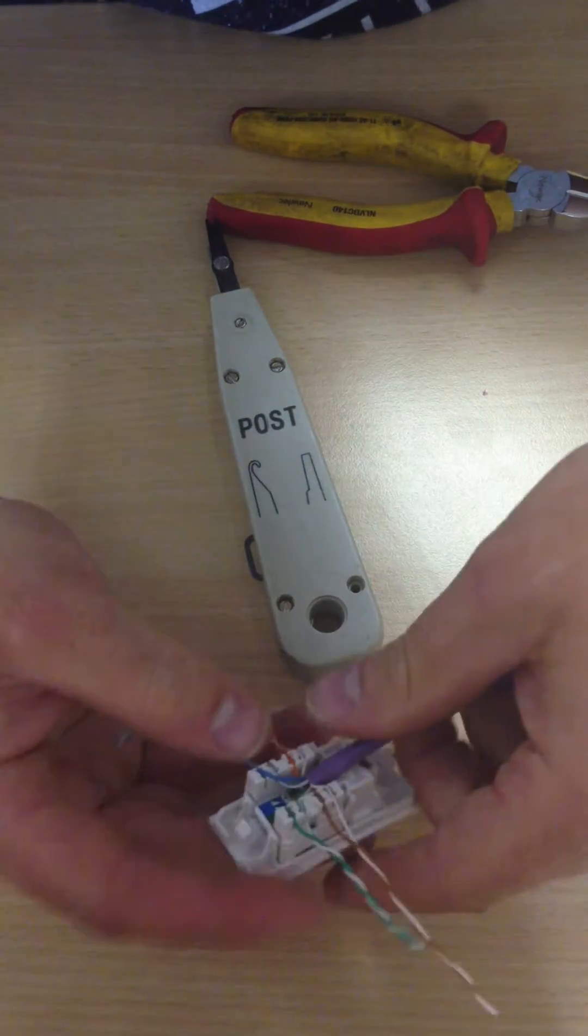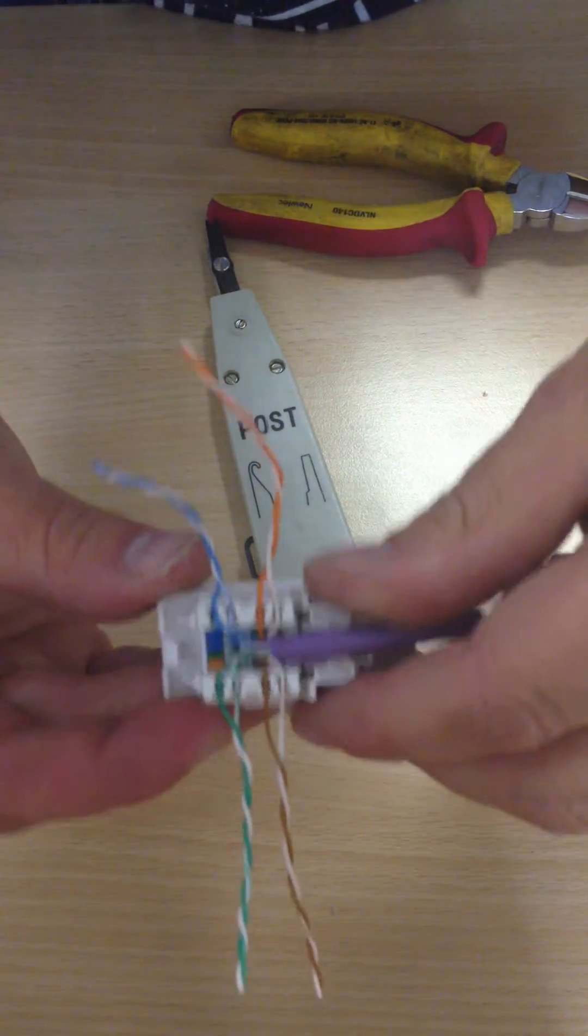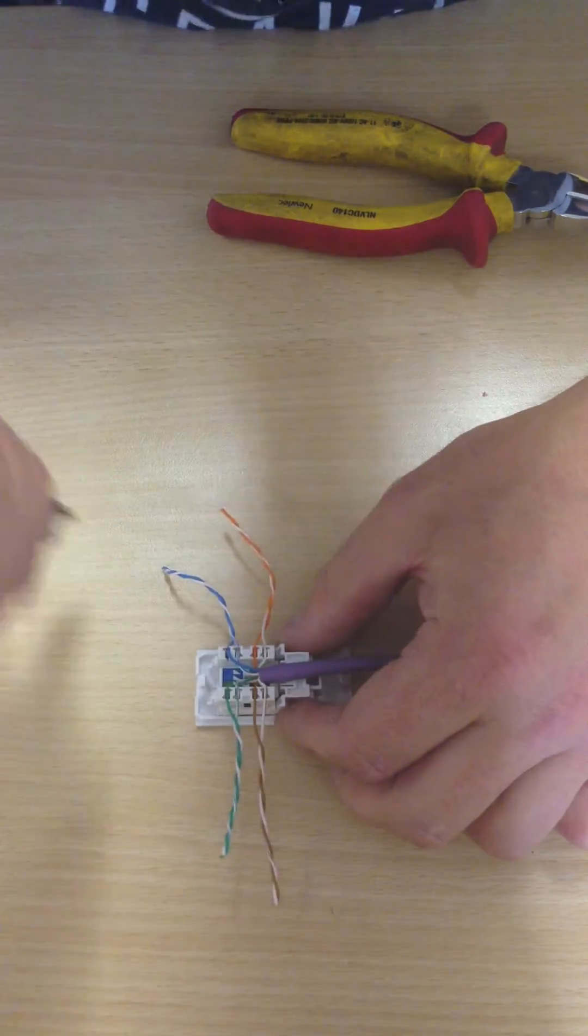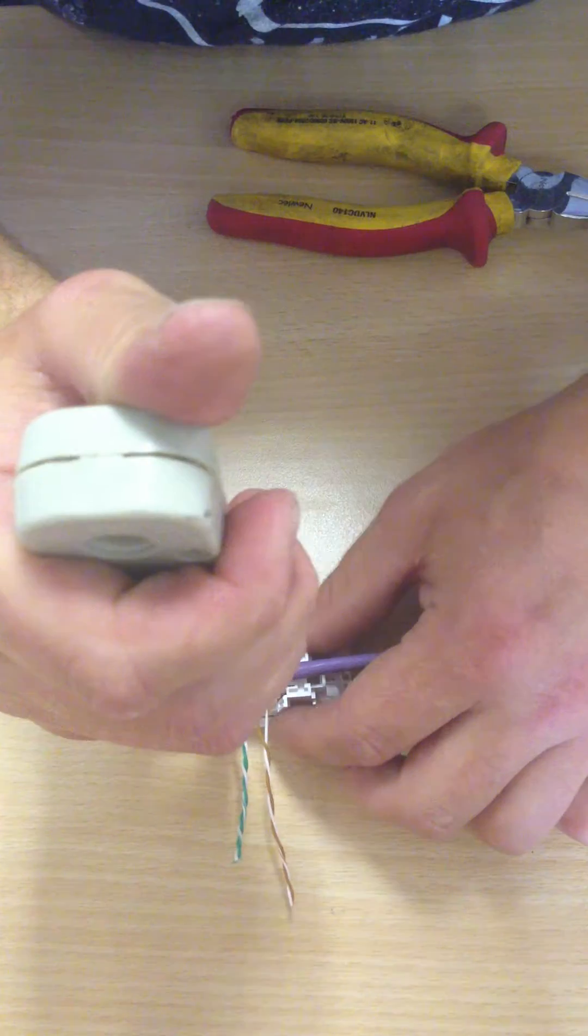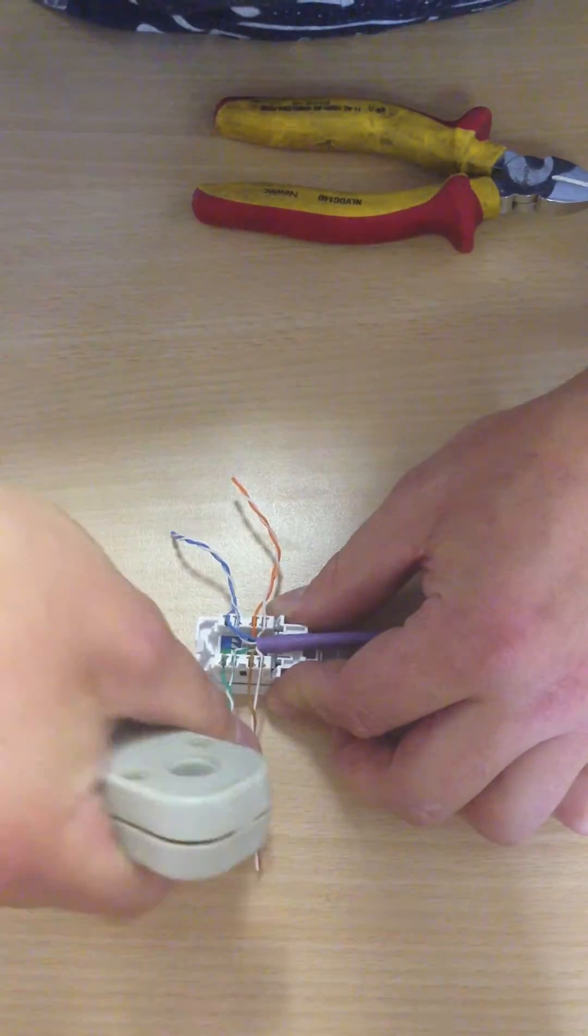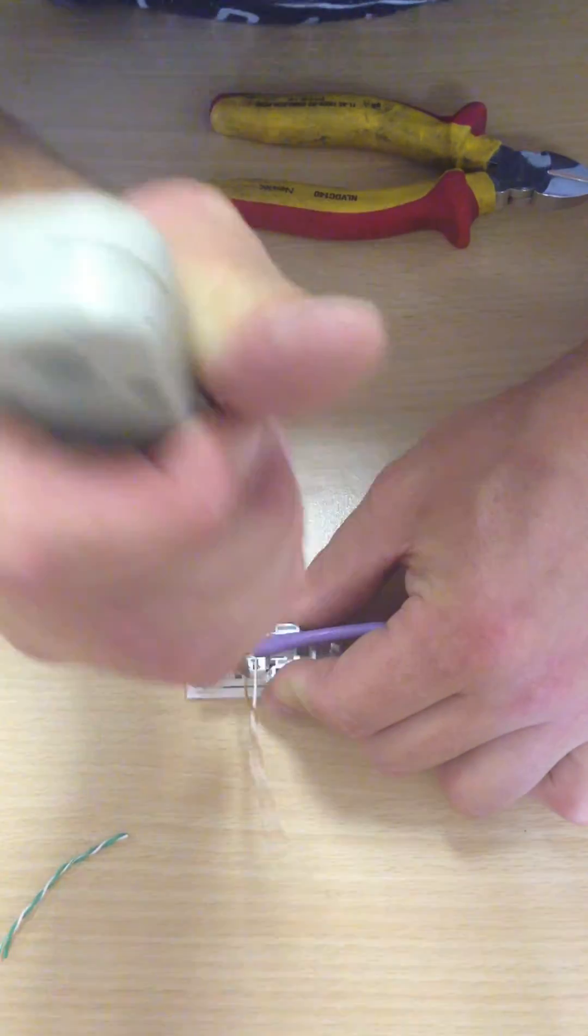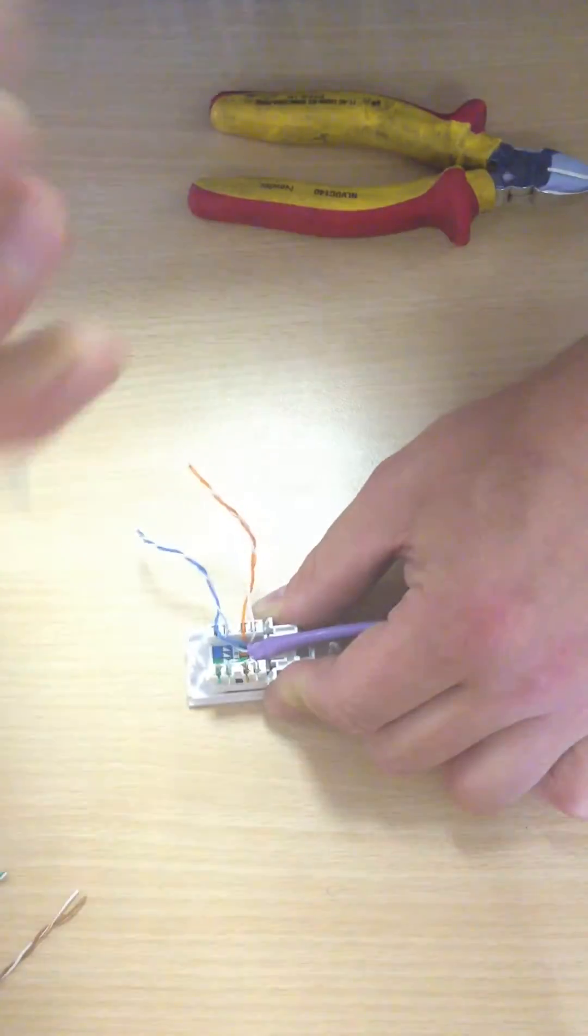So double check you have got them all right. Type B. That looks good to me. That is fine. Now you want to put it on a hard surface or cup it in your hand. I prefer a hard surface if you have got one. And you want to push down like so, and as you do that it will push it in between the pins and chop off the excess.